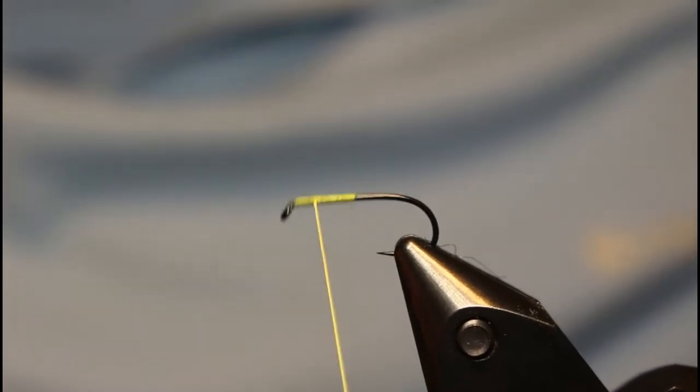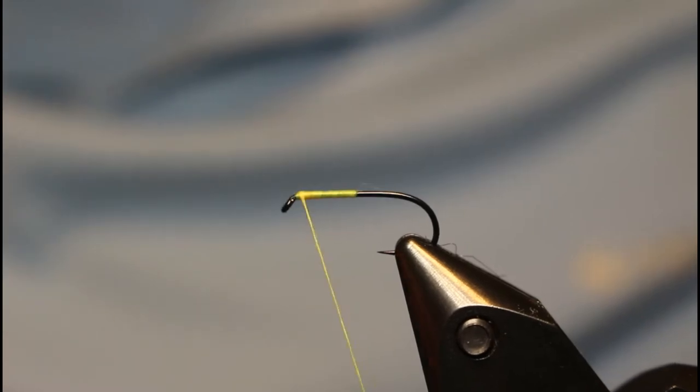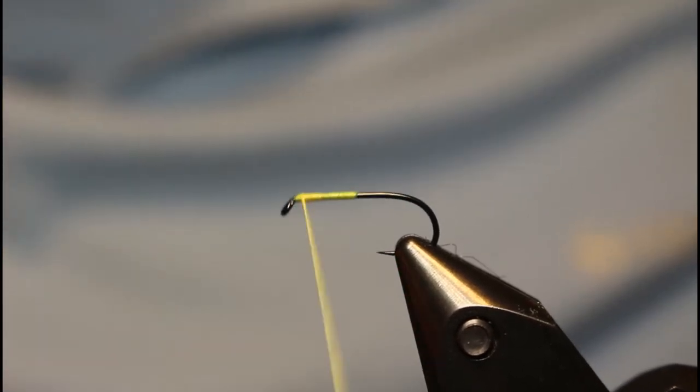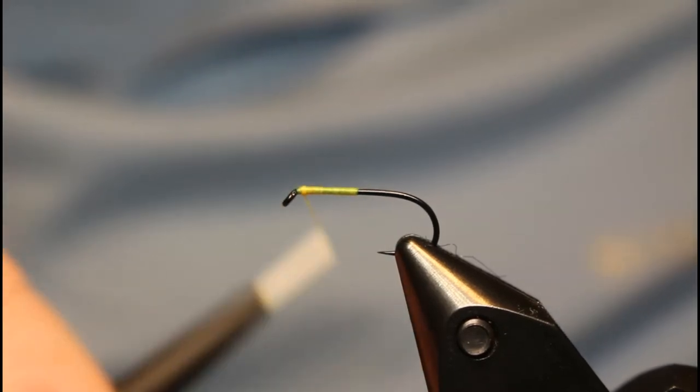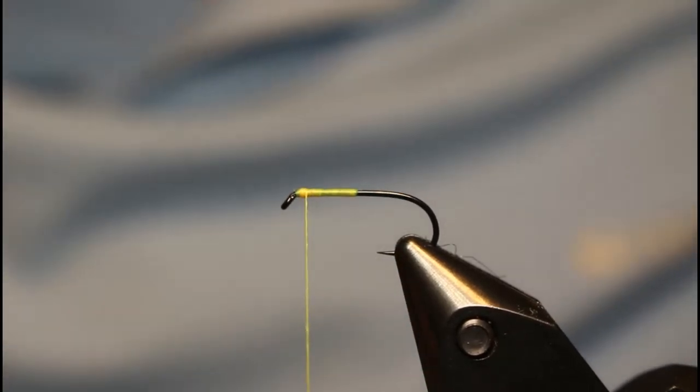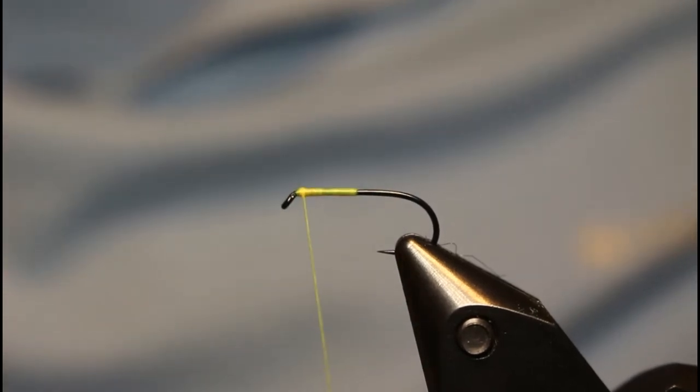So the first part is where to end your thread. You're going to want it almost right behind the eye, maybe a half an eye length back is a great spot to put it. Not too close, but not too far back.